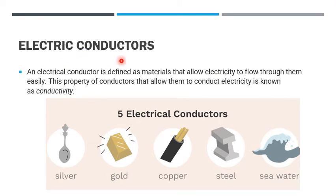Second one is electric conductor. An electric conductor is defined as material that allows electricity to flow through them easily. This property of conductors that allows them to conduct electricity is known as conductivity. Electric conductors are silver, gold, copper, steel, sea water because it is salty.